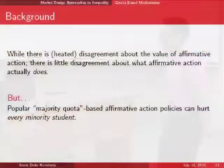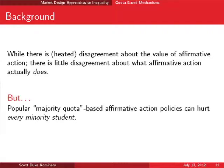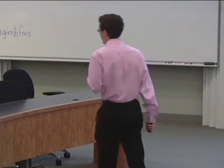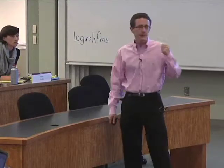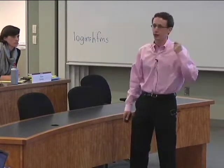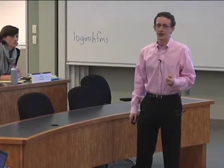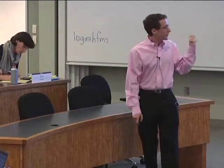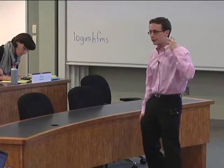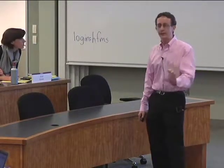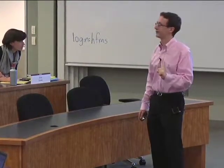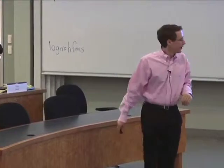Fact: popular majority quota-based systems — where you set a quota saying you can't have more than a certain number of majority students at the school — actually don't work. It's not necessarily the case that they will benefit all minority students; they might in fact hurt all minorities. Moreover, they may be Pareto inferior to the solution without majority quotas — hurting all the majorities and all the minorities. If you look through the lens of stable matching theory, you see this simple implementation might not even do what it's supposed to do.